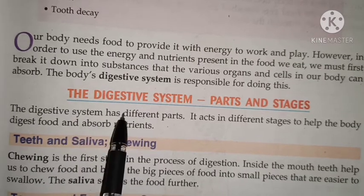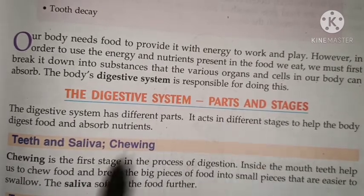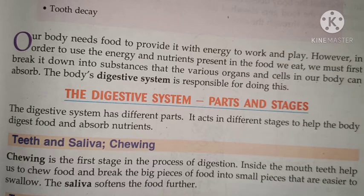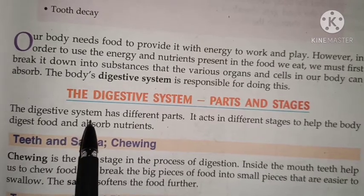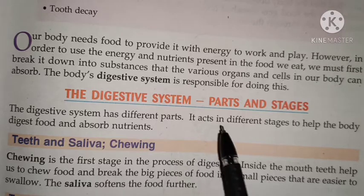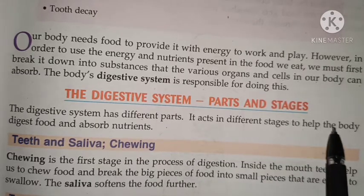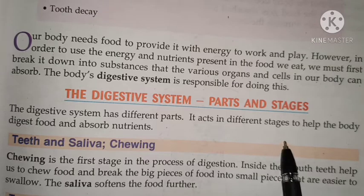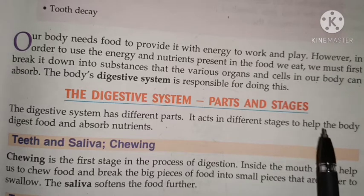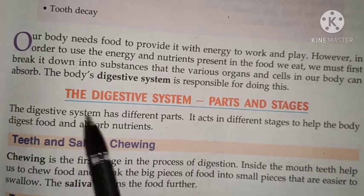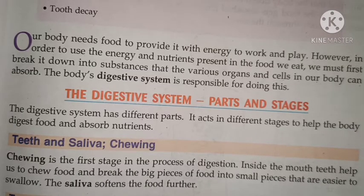Next is the digestive system — parts and stages. Hum digestive system ke parts aur stages ke baare mein padenge. The digestive system has different parts — digestive system ke alag-alag parts hain — in acts in different stages to help the body digest food and absorb nutrients. Alag-alag stages hoti hain jo help karti hain body ko food digest karne mein aur food mein se nutrients absorb karne mein.